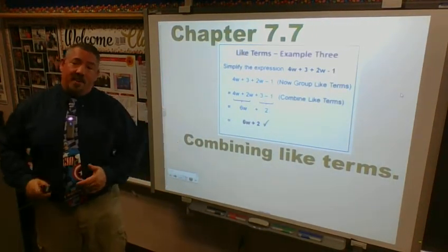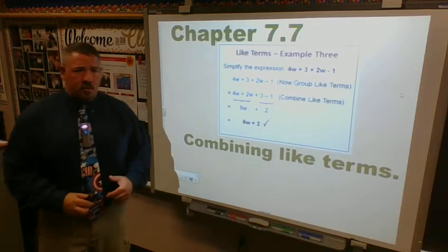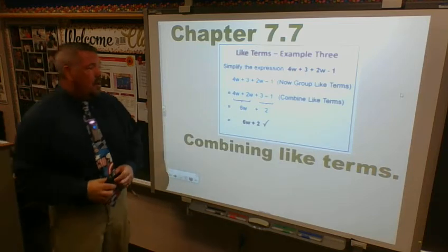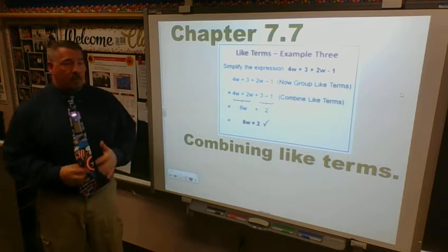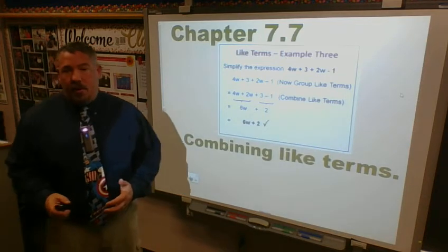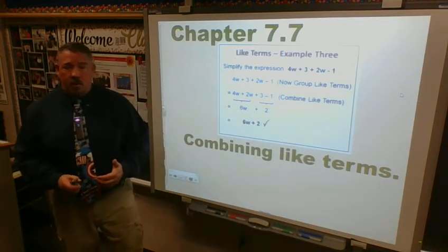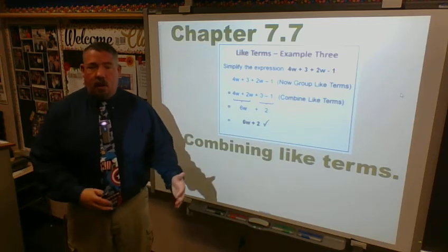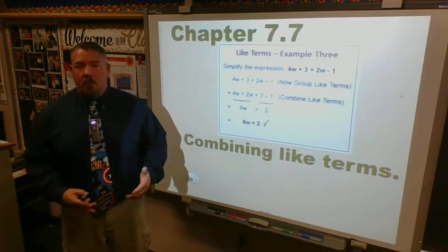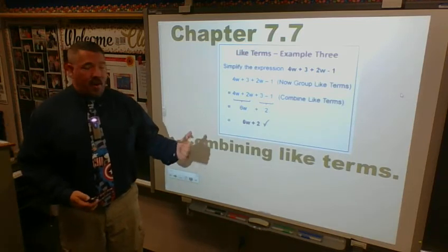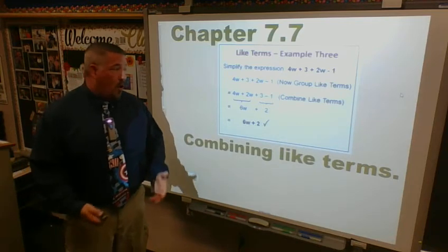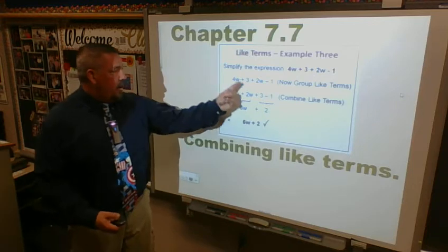We're moving on to chapter 7, lesson 7. This should be a pretty easy lesson — just follow along and remember what I'm saying as we go through this process. We're looking for things that are alike. Like putting M&Ms into groupings by color, or separating a class into boys and girls. With algebraic expressions, we're going to put them into what's called like terms. Terms are anything in the math problem separated by addition and subtraction.